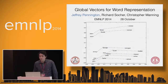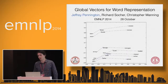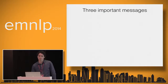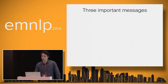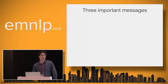Hi everybody. Thank you all for coming. My name is Jeffrey Pennington. I'm going to be talking today about some work that I've done earlier this year at Stanford in collaboration with Richard Socher and Christopher Manning on a new unsupervised learning algorithm for word representations. Before I get too deep into the details of the model, I wanted to highlight what I've come to believe are the three most important high-level insights that we've gained by working on this project.